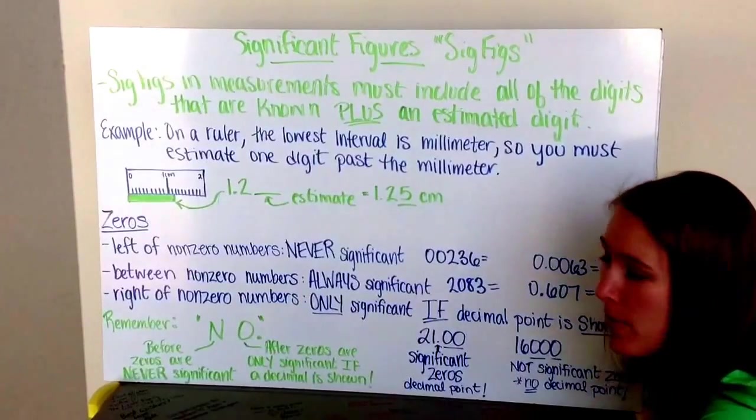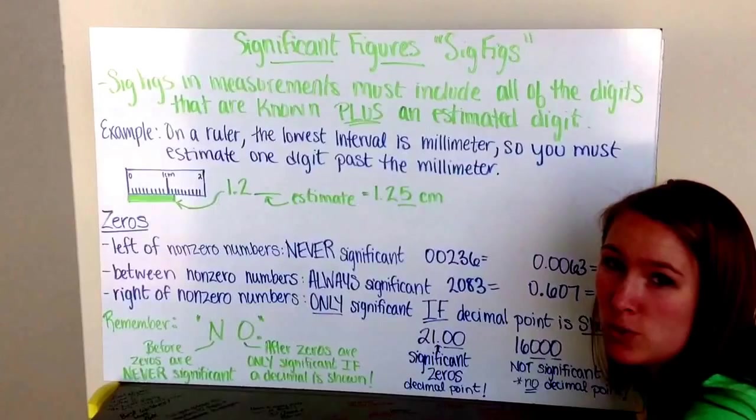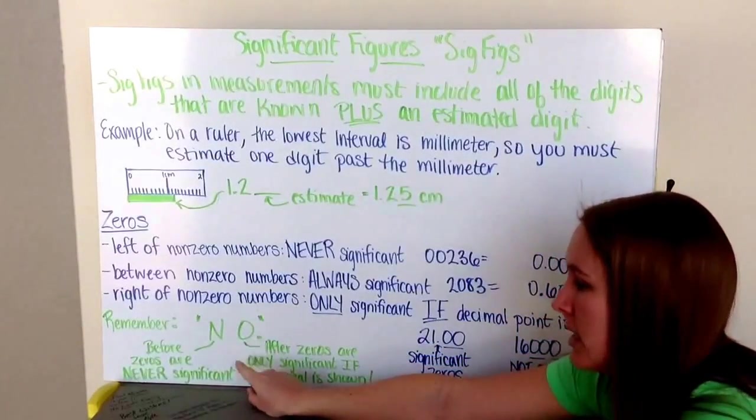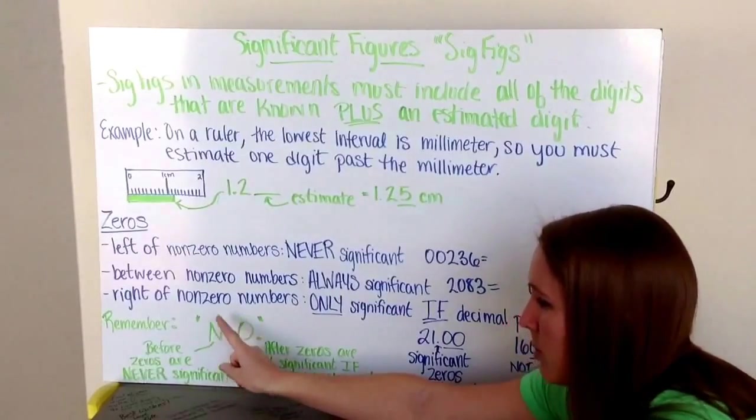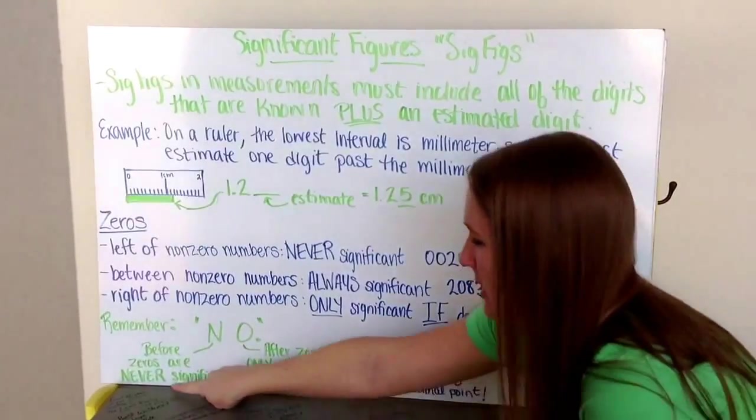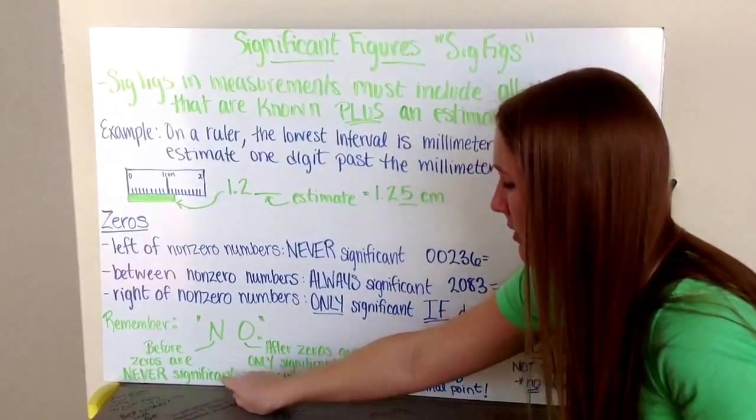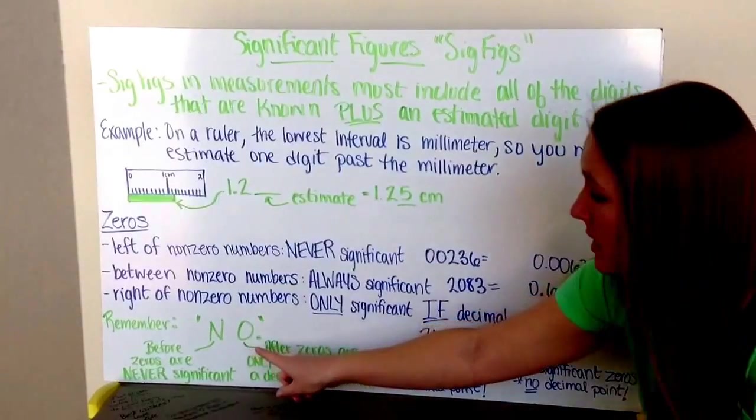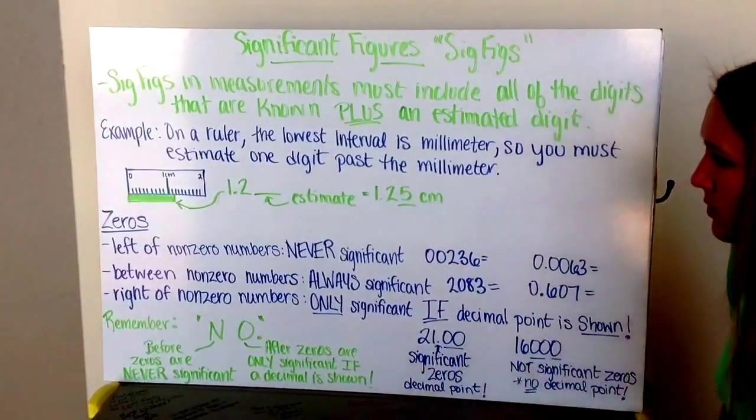Now the way that you can remember significant figures with the zeros as to which ones are important and which ones are not important, there's the phrase 'no period.' N standing for the non-zero numbers before, N standing for never significant. Zeros before non-zero numbers are never significant. And the O period stands for only with a decimal. Zeros after are only significant if a decimal is shown.